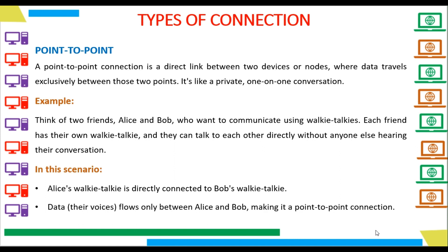An example of a Point-to-Point Connection: think of two friends, Alice and Bob, who want to communicate using walkie-talkies. Each friend has their own walkie-talkie and they can talk to each other directly without anyone else hearing their conversation. Alice's walkie-talkie is directly connected to Bob's walkie-talkie, and data — their voices — flows only between Alice and Bob, making it a Point-to-Point Connection.